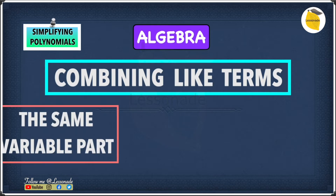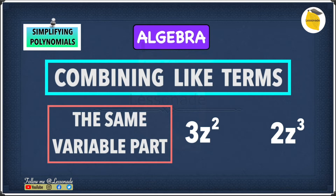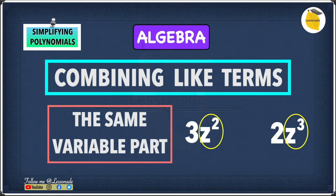What are like terms? They are terms with the same variable parts. Most people may think that 3z raised to the power of 2 and 2z raised to the power of 3 are like terms because they both have z in their variable parts. But in the first term, the variable part is z raised to the power of 2, and in the second term, the variable part is z raised to the power of 3. Since z² and z³ are raised to different powers, they are not the same, which means these are not like terms.